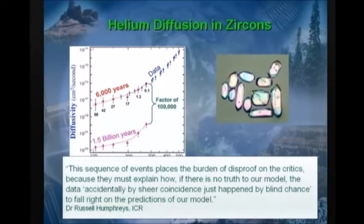But anyways, this sequence of events places the burden of disproof on the critics, because they must explain how, if there's no truth to our model, the data accidentally, by sheer coincidence, just happened by blind chance to fall right on the predictions of our model. That's the way science is supposed to work. He made a prediction. He published it. About two years later, the data came out, and it confirmed it.